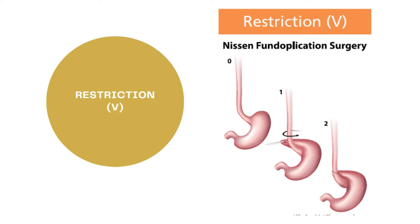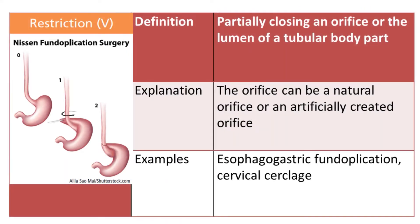Today we are looking at the root operation Restriction, which carries a character value of V. Root operations are the most important aspect of building an ICD-10-PCS code. You always pick the root operation based on the objective or goal of the procedure. Restriction is defined as partially closing an orifice or the lumen of a tubular body part. The orifice can be a natural orifice or an artificially created orifice like a stoma.